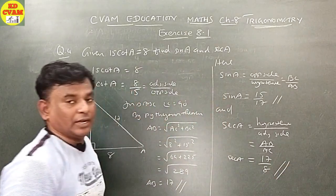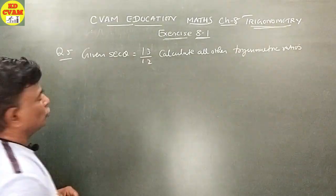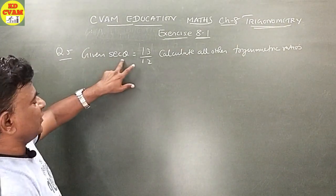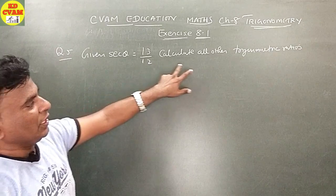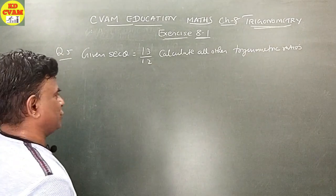Understood. Next up. Question number 5: given sec theta is equal to 13 upon 12, calculate all other trigonometric ratios.